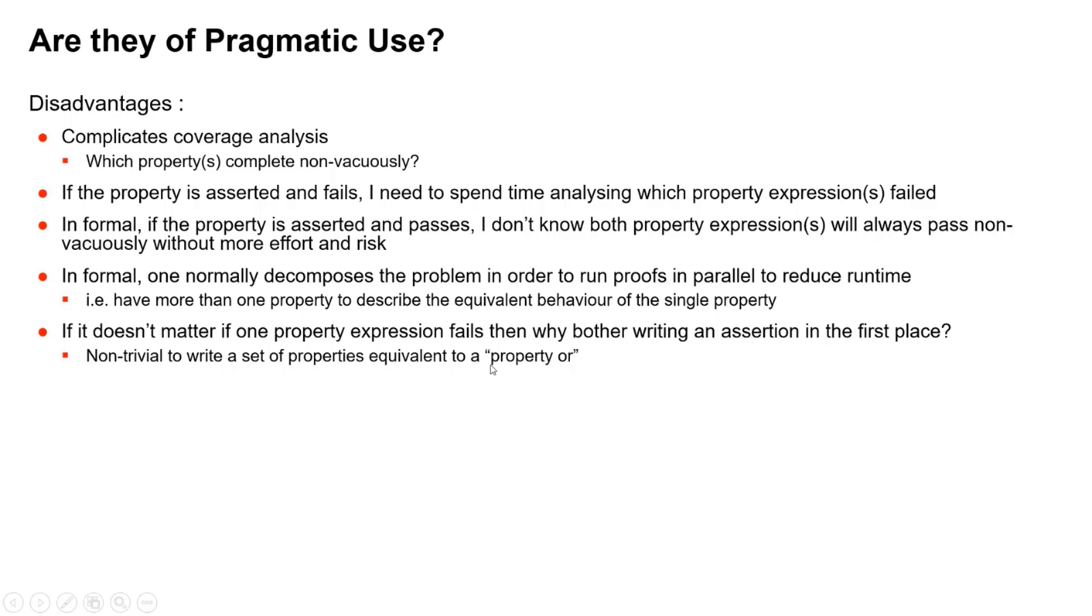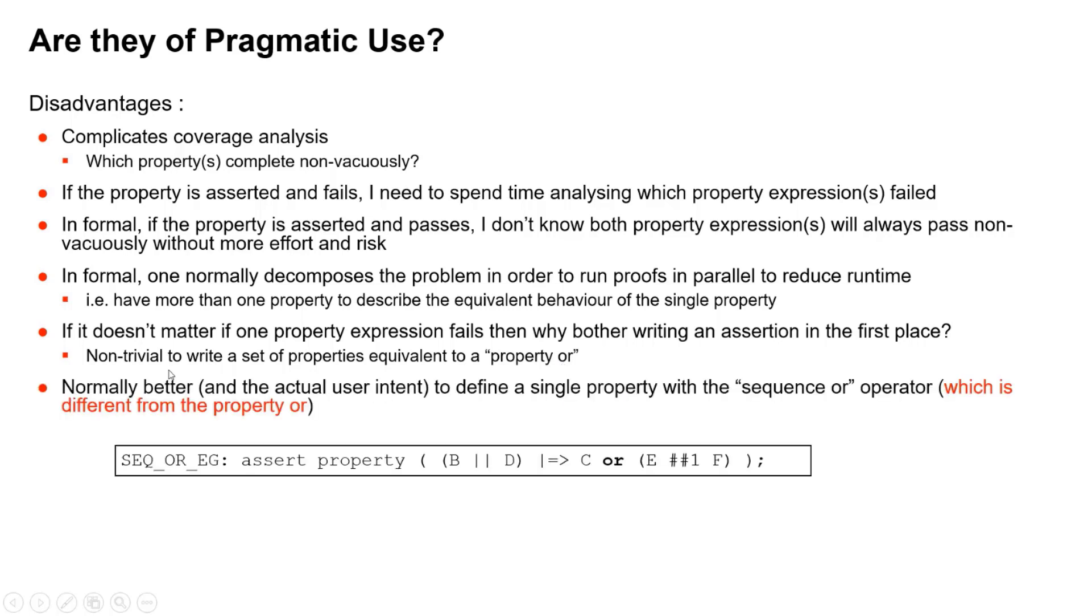Now, unlike the property AND, you cannot define easily a set of properties which are equivalent to a property OR. So normally what people intend when they're using this kind of thing is they misunderstand that a sequence OR and a property OR are not the same thing. So there is a sequence OR operator which allows success of one sequence OR the other OR both, and this is normally what people intend.